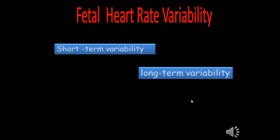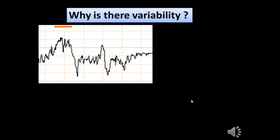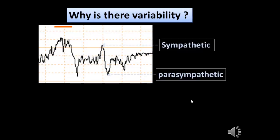Fetal heart rate variability has two components: long-term variability and short-term variability. Variability occurs as the effect of the sympathetic and parasympathetic autonomic nervous system on the heart. While the sympathetic increases the fetal heart rate, the parasympathetic acts to reduce it, and the fluctuation between them produces long-term variability.